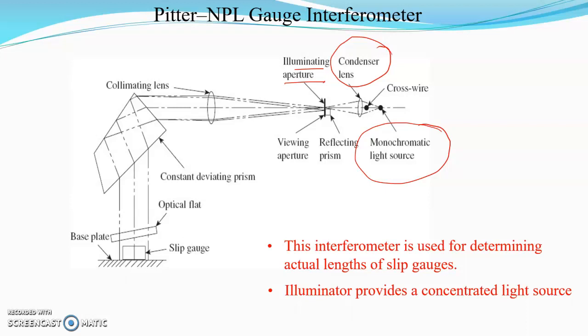A parallel beam of light falls on a constant deviating prism. This prism splits the incident light rays into different wavelengths and hence different colors.